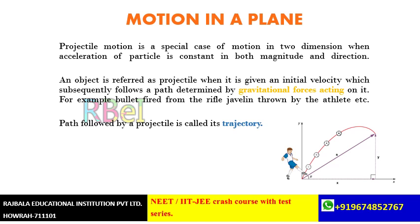There are some formulas: maximum height, time of flight, and maximum range. When do we get the maximum range? At 45 degrees. For sin 2 theta, we need it to equal 1, so 2 theta must equal 90, which means theta equals 45. So 45 degrees is the angle for maximum range — this is a very important and basic question.